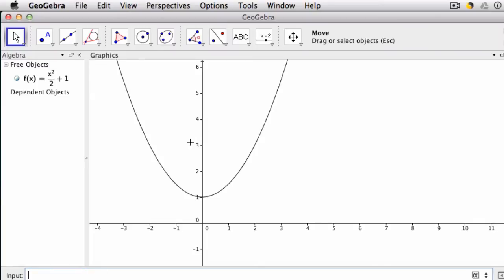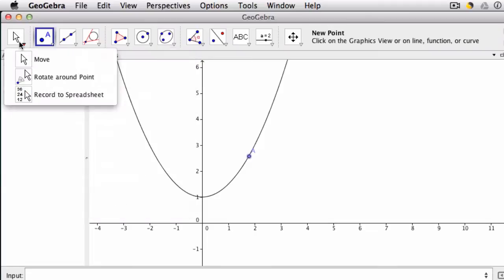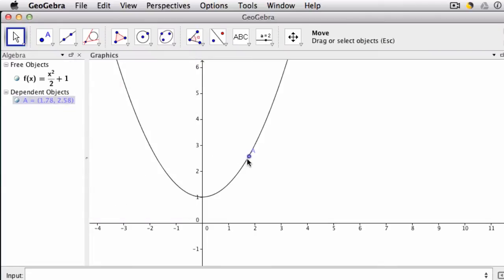Then I'm going to use my tool over here to create a new point on that parabola. I highlight the parabola and click, and then I grab my move tool, and I just want to move the point around to make sure I actually placed it on the line, and I did.